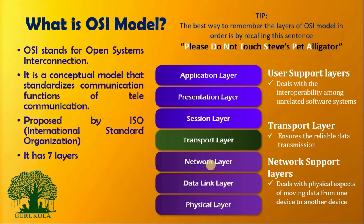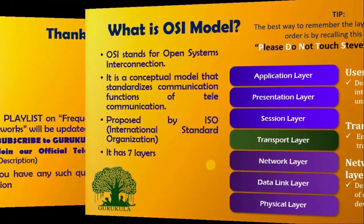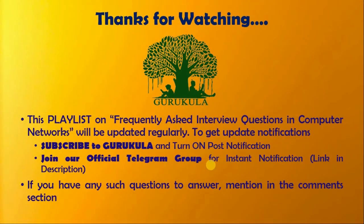The best way to remember the layers of the OSI model in order is by recalling this sentence: 'Please Do Not Touch Steve's Pet Alligator.' Every first letter in each word names a particular layer — P for Physical, D for Data Link, N for Network, and so on. With this, you now have enough content to tackle your interview question on what the OSI model is, including all seven layers and their names.